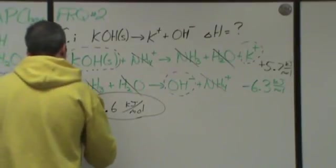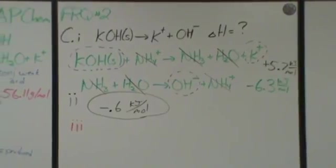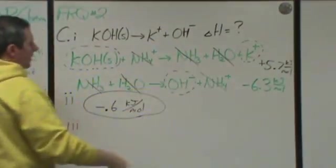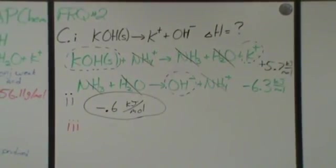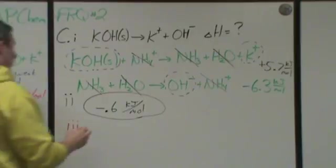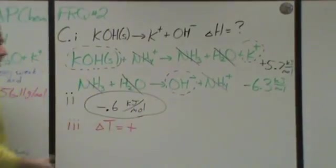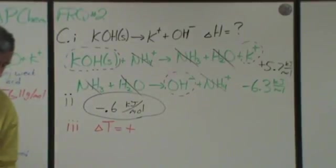The last question says if you were to actually do that reaction in part C1, what would you expect to happen to the water? If I'm dissolving potassium hydroxide in water, it turns out the delta H for that according to this is negative. Which implies that if you dissolve it, you would expect the temperature of the water to go up. So the temperature change would be positive. Or I'd expect it to get warm, or warmer. Anything along those lines would be correct.